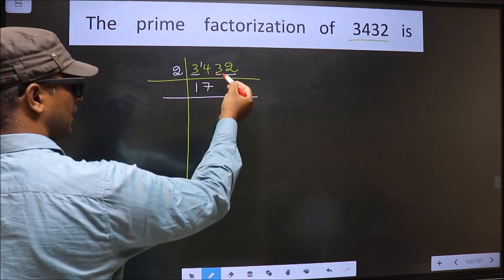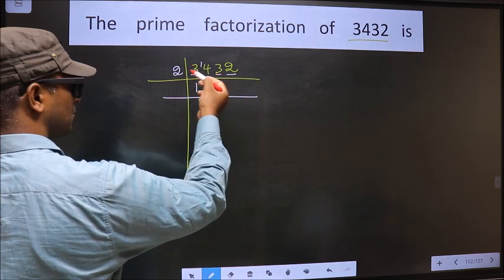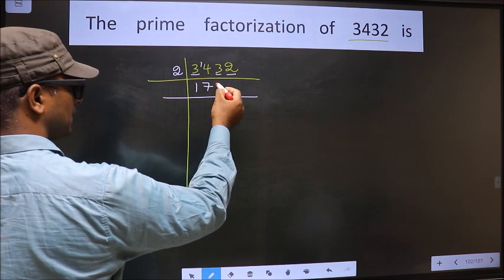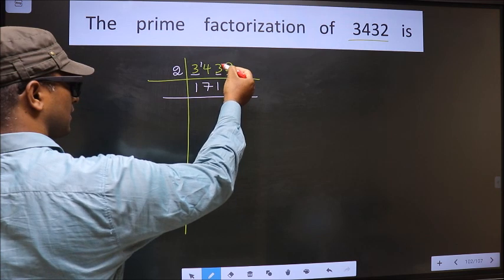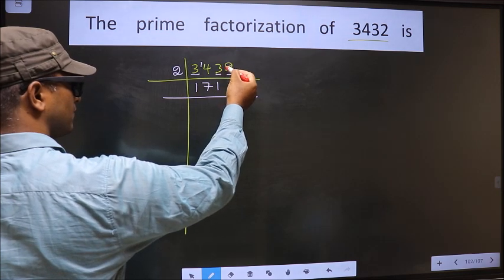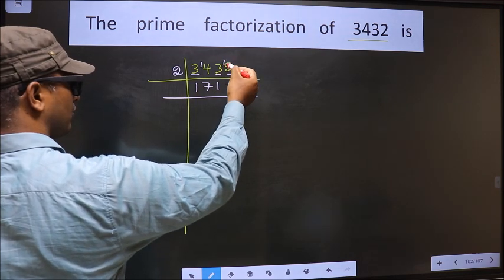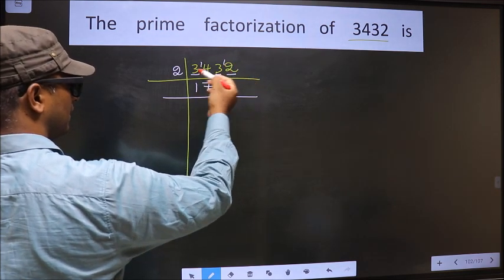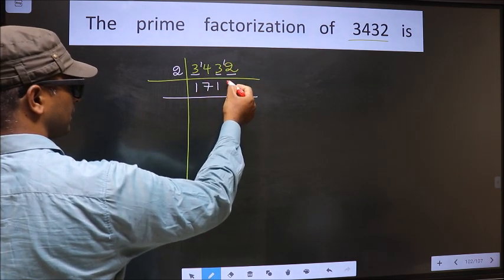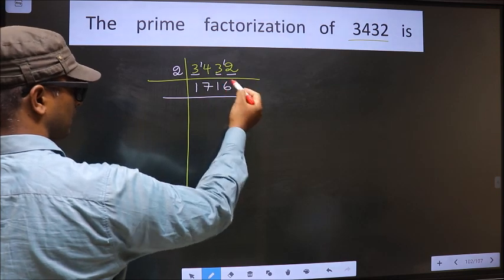The next number is 3. A number close to 3 in the 2 table is 2 ones, 2. 3 minus 2 is 1, carried forward making it 12. When do we get 12 in the 2 table? 2 sixes, 12.